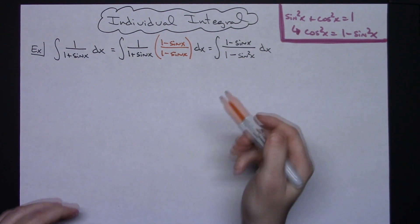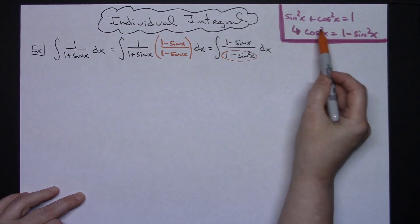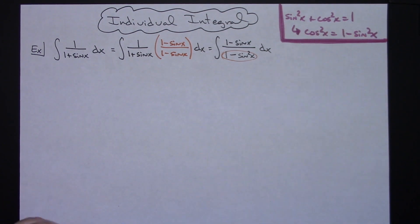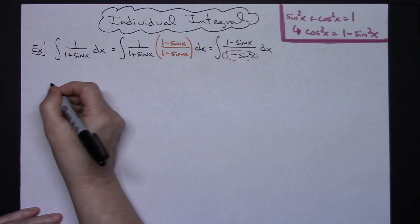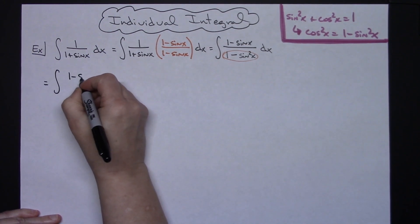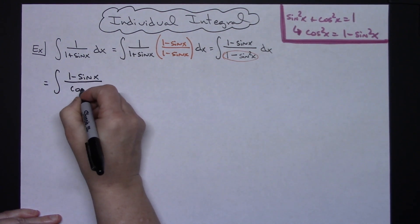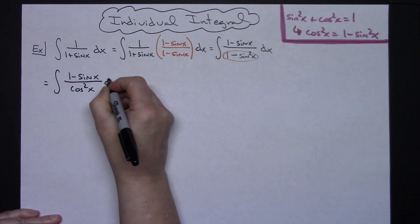All right now that allows me to then take a look at this denominator and know that I can substitute in a cosine squared x for that. Okay so then I'm going to have the integral of 1 minus sine x all over cosine squared x doing that substitution.